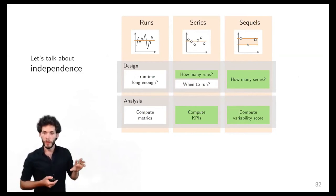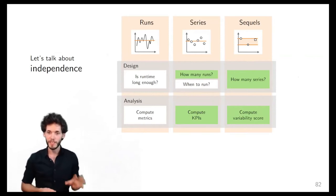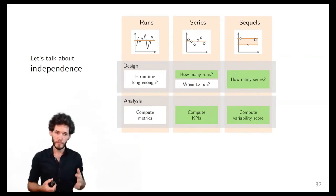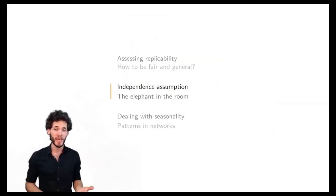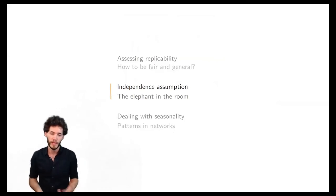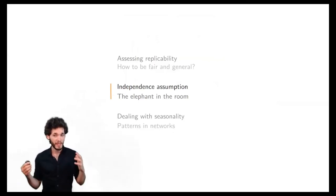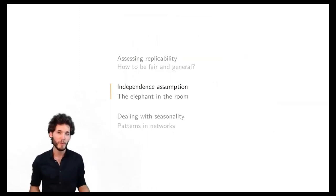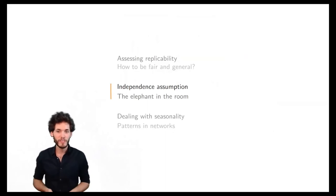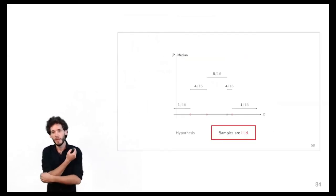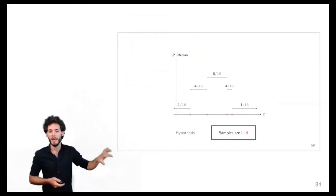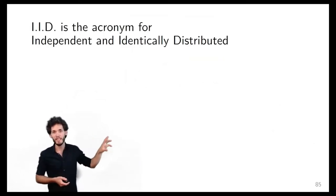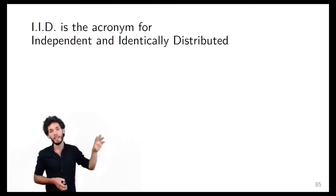Now it's more than time to talk about independence — this is really the elephant in the room. What is independence? It's not that complex to understand, but it's a concept that's quite fuzzy for many people. Even senior researchers are not always completely clear on what this means. I showed this before when I discussed the math — we were making the assumption that samples are IID. What is IID? It stands for Independent and Identically Distributed.